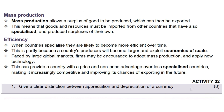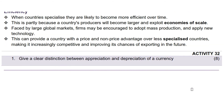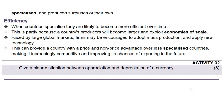The last effect is efficiency. When countries specialize, they are likely to become more efficient over time. This is partly because a country's producers will become larger and exploit economies of scale. Faced by large global markets, firms may be encouraged to adopt mass production and apply new technology. This can provide a country with a price and non-price advantage over less specialized countries, making it increasingly competitive and improving its chances of exporting in the future.